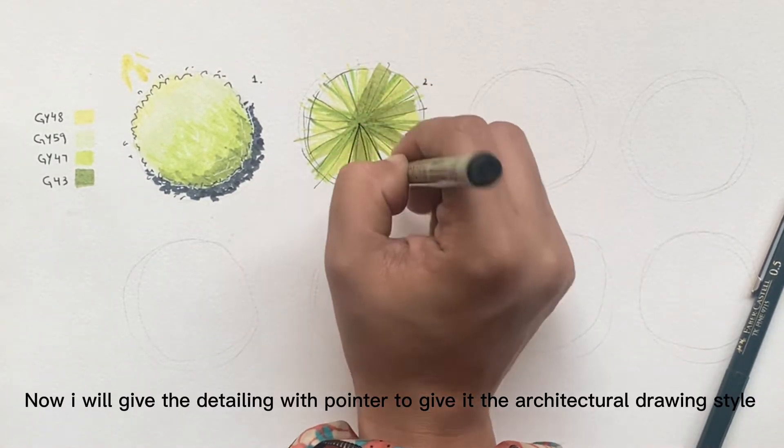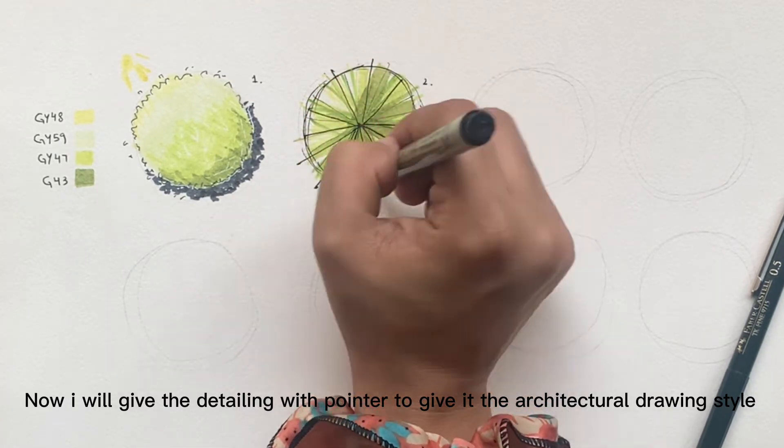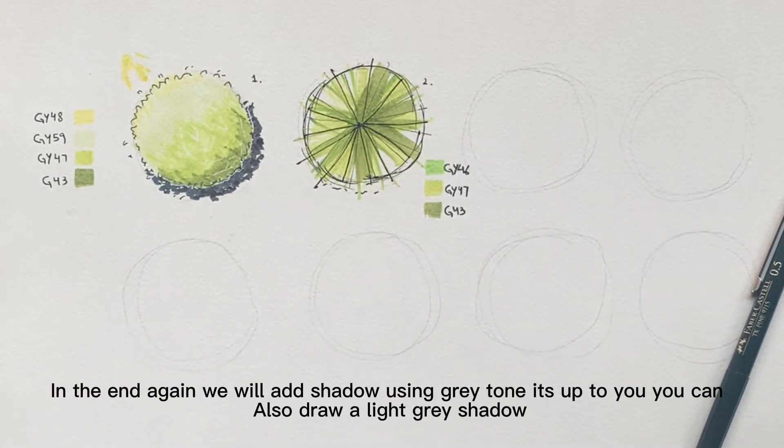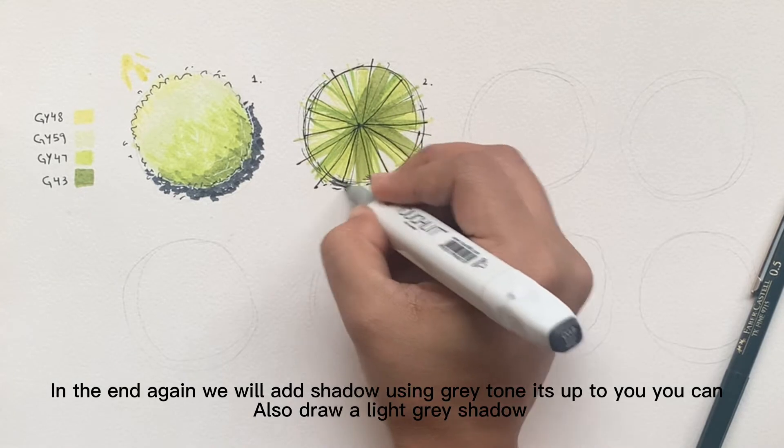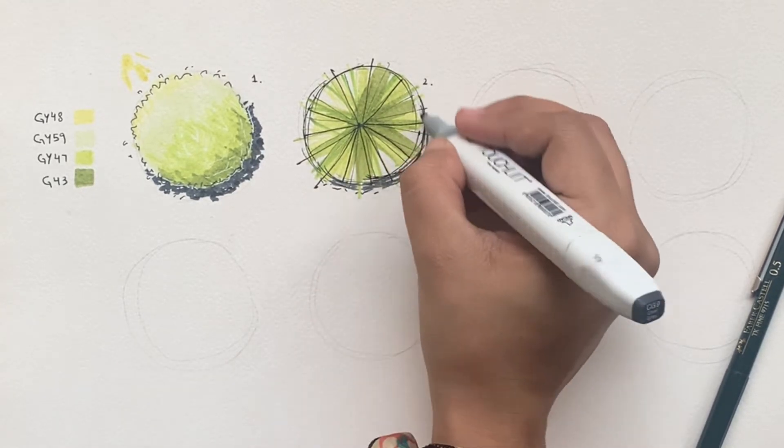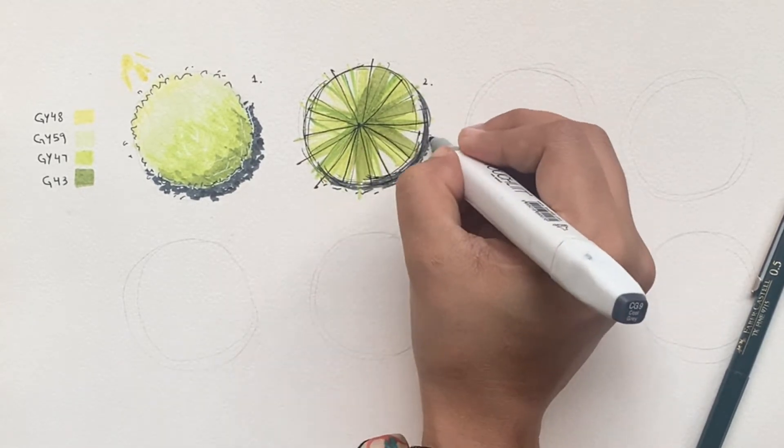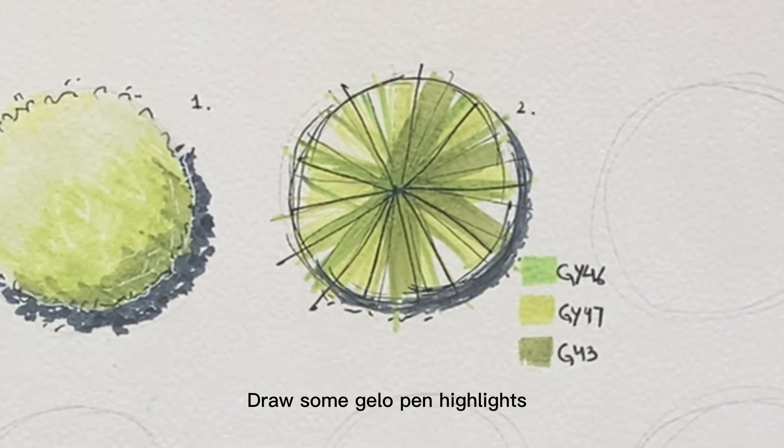Now I will give the detailing with pointer to give it the architectural drawing style. In the end again we will add shadow using gray tone. It's up to you, you can also draw a light gray shadow. Draw some gel pen highlights.